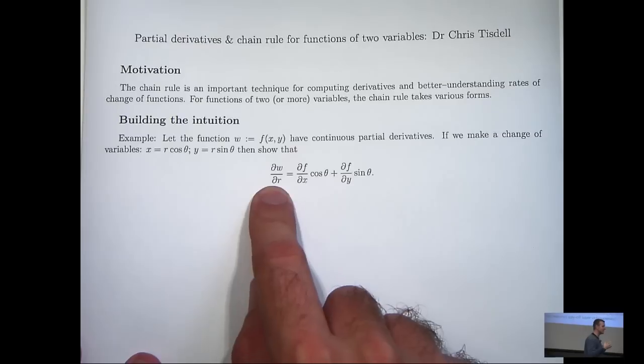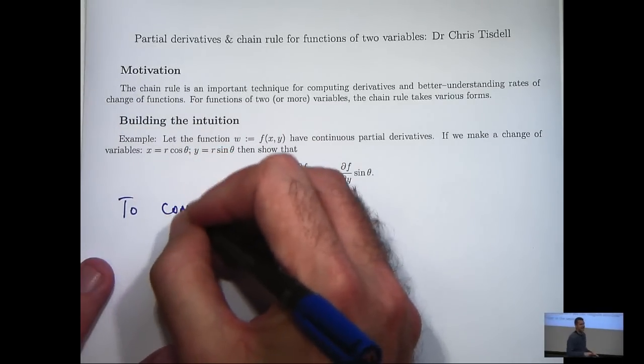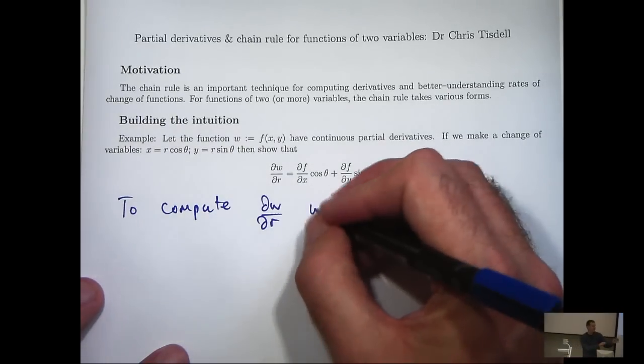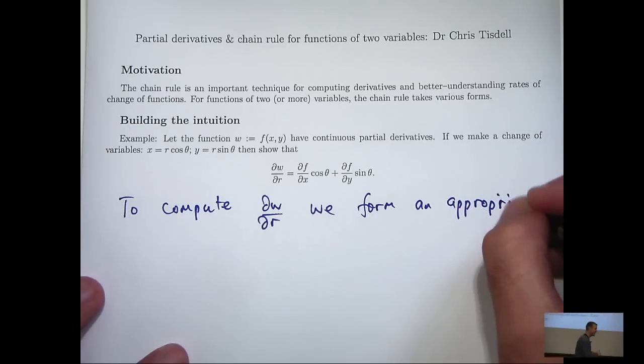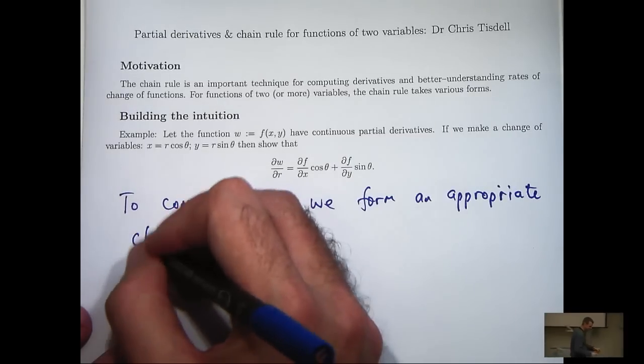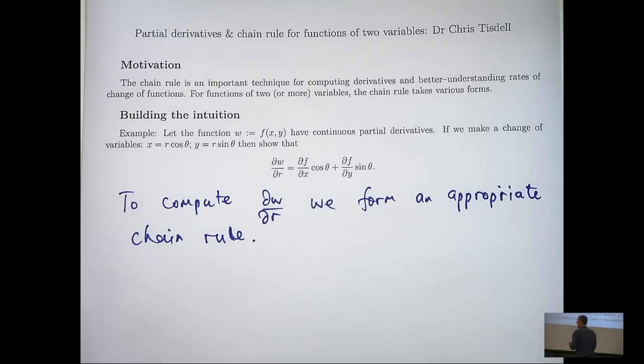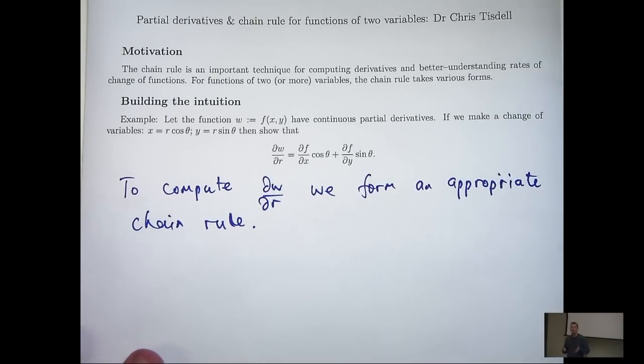Now, let's get back and see how we can compute this derivative and what the chain rule is. So to compute the derivative dw/dr, we form an appropriate chain rule. Now, the first question is, what is the appropriate chain rule in this case for dw/dr? Now, there are lots of formulas you can try to remember, but I like to draw a little diagram that, when used properly, can construct any chain rule. So let me show you how it works.